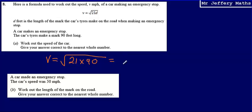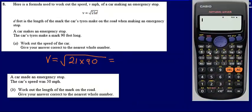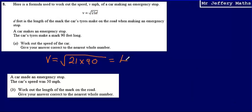That is going to give us an answer of 43.47. We're asked to give our answer correct to the nearest whole number, so we'll call that 43. Work out the speed of the car - so it's 43 miles per hour.